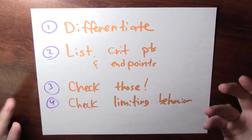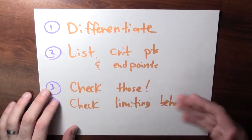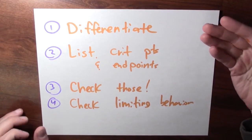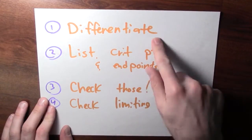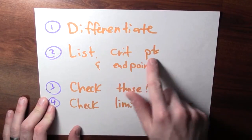Provided some conditions are satisfied, the extreme value theorem guarantees the existence of maximum and minimum values. But how are we supposed to find those maximum and minimum values? We've actually already done this in some examples, but it's worth describing an explicit process. Here's a four-step process. First, differentiate your function, then find all the critical points.